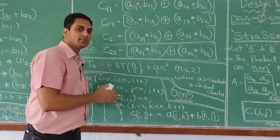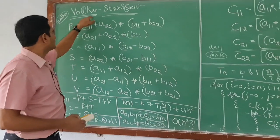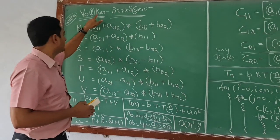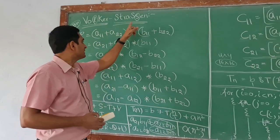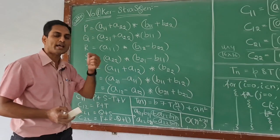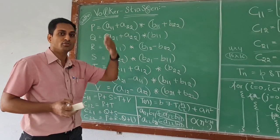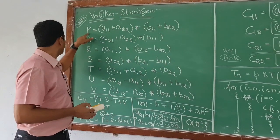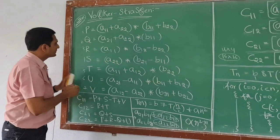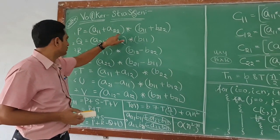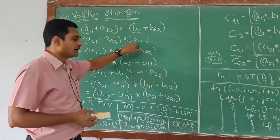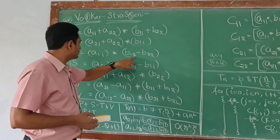Now coming to Strassen's matrix multiplication. The scientist's full name is Volker Strassen — V-O-L-K-E-R, where the L is silent. Volker Strassen reduced some multiplications, which reduces time. In computing, even nanoseconds matter. He defined seven intermediate values P, Q, R, S, T, U, V. For example: P = (A(1,1)+A(2,2)) × (B(1,1)+B(2,2)); Q = (A(2,1)+A(2,2)) × B(1,1); and A(1,1) × (B(1,2)−B(2,2)).